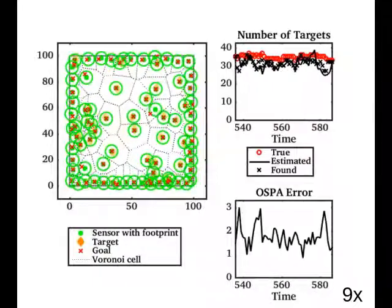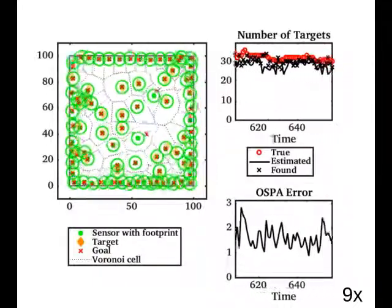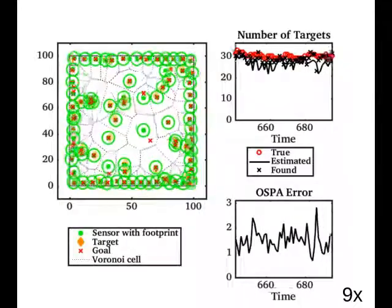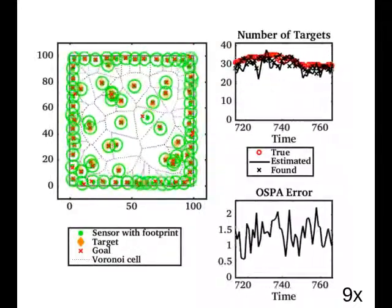The figure in the upper right shows the number of targets over time. The red circles are the true number of targets, the solid black line is the expected number of targets from the PHD filter, and the black x's are the number of peaks extracted from the PHD.